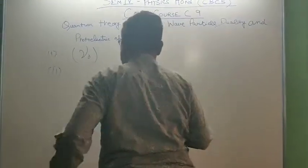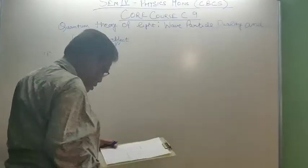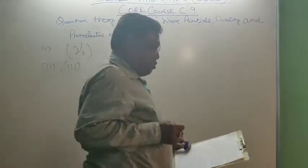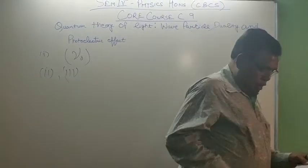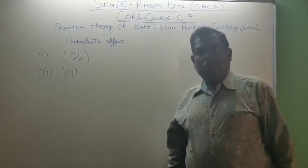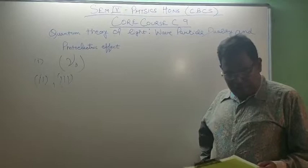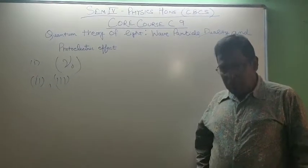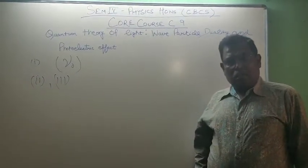Number 3: The number of electrons emitted from the metal surface depends upon intensity of incident wave and is independent of frequency of the incident wave.